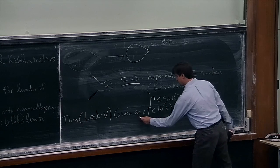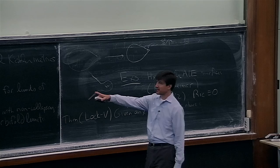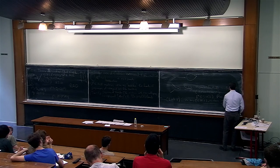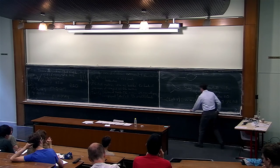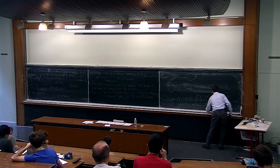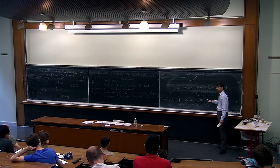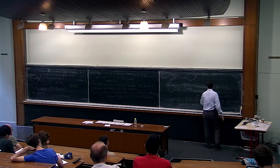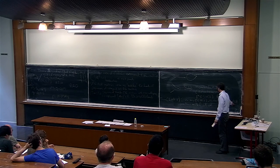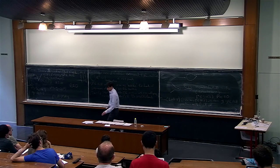Given any Γ in U(2) — a finite subgroup acting freely on the three-sphere — there exist SFK ALE metrics with group Γ at infinity. In contrast to the Einstein case, the only known examples with Γ in SU(2) are Ricci flat. Any other group has a scalar flat Kähler metric, and these are in general not Einstein. So there are many examples of scalar flat Kähler ALE metrics.